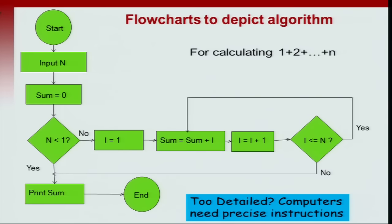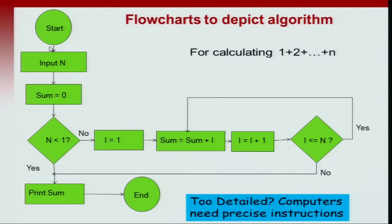Suppose you want to write an algorithm for adding the first n numbers. All of you know how to do it. The point is how do you describe this step by step to somebody who does not know it already. First you have to take what is the upper limit n, and then you have to sum them up. One way to sum them up is start with an initial sum of 0 and then add numbers 1 by 1.